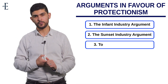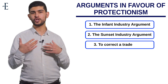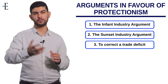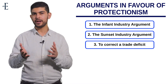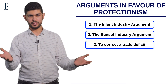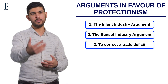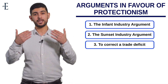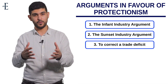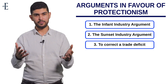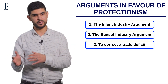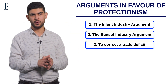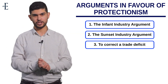Number three is straightforward. If a country has a deficit on its current account, it is importing more than it is exporting, and it may want to correct that trade imbalance. By imposing a quota or a tariff, you limit the level of imports coming into your economy, and therefore you are in a better position on your current account because imports go down. Those are the three main reasons to argue in favor of protectionism.